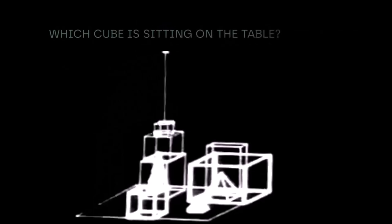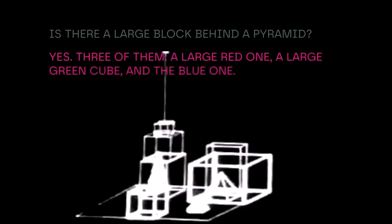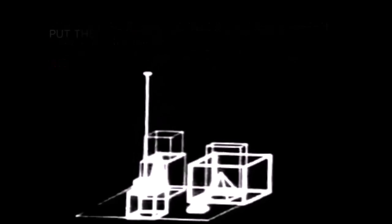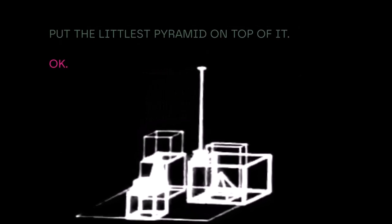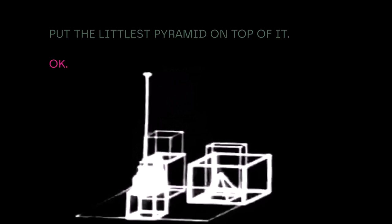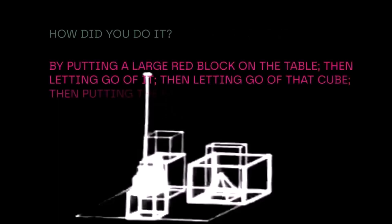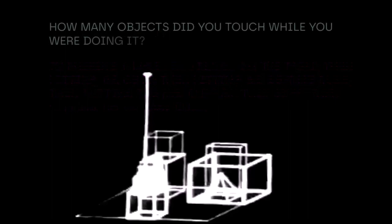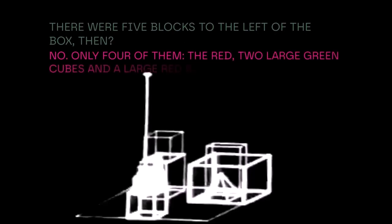'Which cube is sitting on the table?' 'The large green one which supports the red pyramid.' 'Is there a large block behind a pyramid?' 'Yes, three of them: a large red one, a large green cube, and the blue one.' 'Put a small one onto the green cube which supports a pyramid.' 'Okay.' 'Put the littlest pyramid on top of it.' 'Okay.' 'How did you do it?' 'By putting a large red block on the table, then letting go of it, then letting go of that cube.' 'How many objects did you touch while you were doing it?' 'Four of them.' 'There were five blocks to the left of the box then.' 'No, only four of them: the red, two large green cubes, and a large red block.'